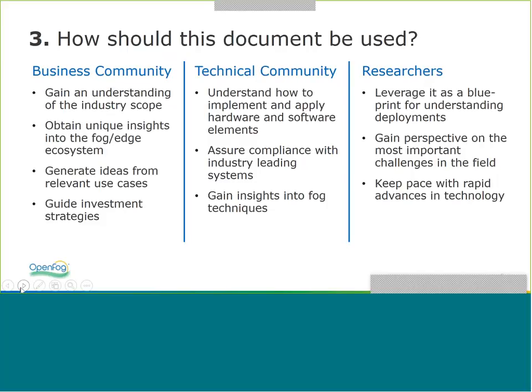Let's talk about researchers, academics, and students who might be interested in reading this reference architecture document. It's really a blueprint for understanding deployment — it will tell you what the market cares about most and help guide the direction of your research. Chapter 8 describes some of the challenges and remaining things to be done in the OpenFOG ecosystem. Researchers love a challenge and should find that section particularly interesting. Academia sometimes struggles to keep pace with the rapid rate of commercial progress, and this is a really good snapshot of what very smart people from very advanced companies have decided should be put in place.